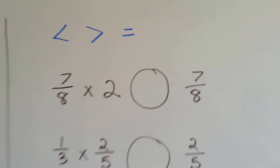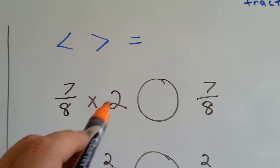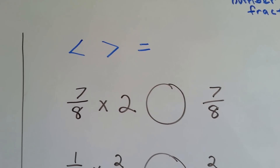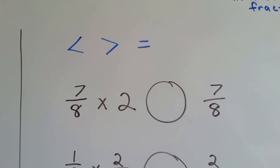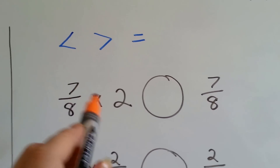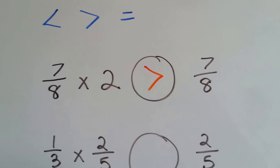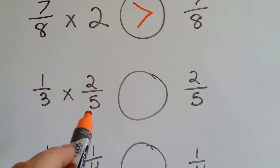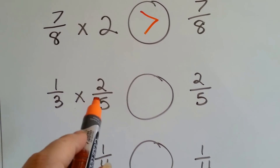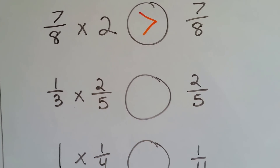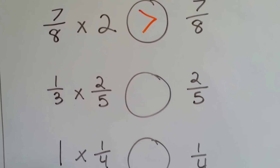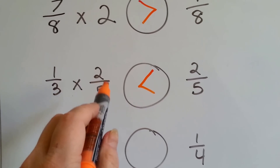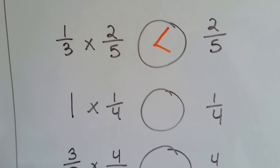So let's take a look at these. If I multiplied seven-eighths times 2, do you think it will be bigger, smaller, or equal to seven-eighths? Well, if you said this is going to be larger than the fraction, you're right. What about this one? What if we multiplied one-third times two-fifths? Which one is going to be bigger — this or the fraction? If you said this fraction is bigger, you're right, because when we multiply a fraction by a fraction, it's smaller than that fraction.